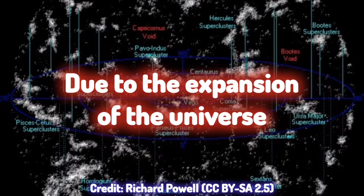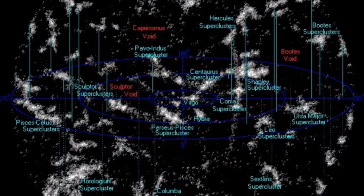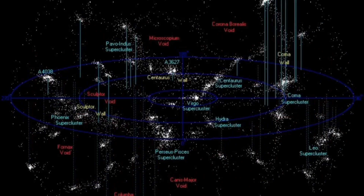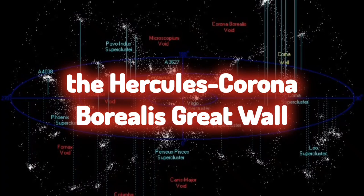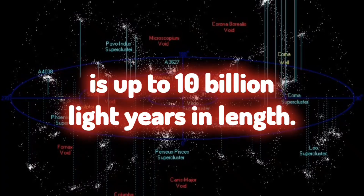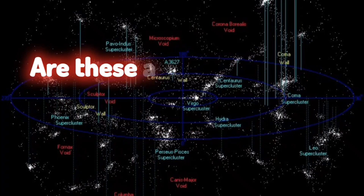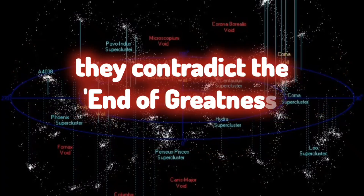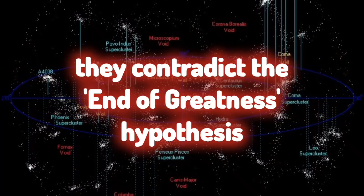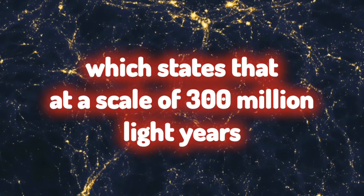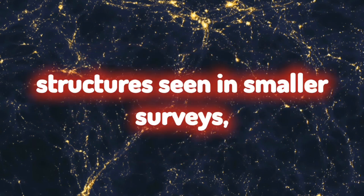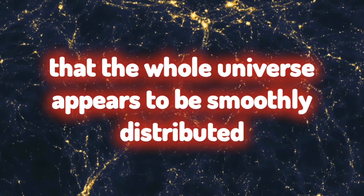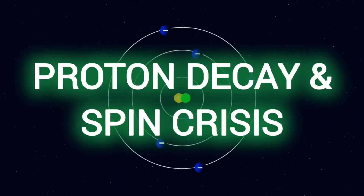Due to the expansion of the universe beating the effect of gravity, but the Sloane Great Wall is 1.38 billion light years in length, and the largest structure currently known, the Hercules-Corona Borealis Great Wall, is up to 10 billion light years in length. Are these actual structures or random fluctuations in density? If they are real structures, they contradict the end of greatness hypothesis, which asserts that at a scale of 300 million light years, structures seen in smaller surveys should be randomized to the extent that the universe appears to be smoothly distributed.